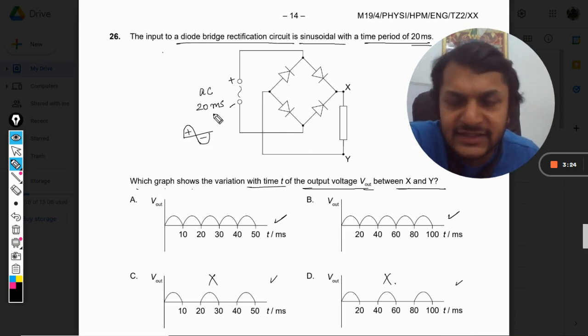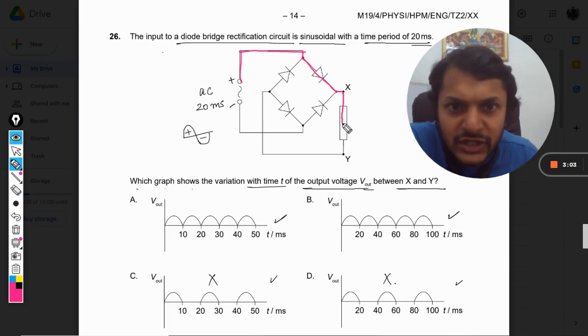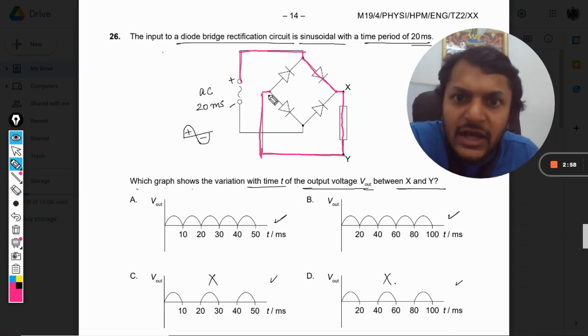So if the current will move like this, current will go like this, like this, like this. Now here this will become reverse biased and so this diode will not let the current pass through it, but this diode will let the current pass through it and the current has reached X.